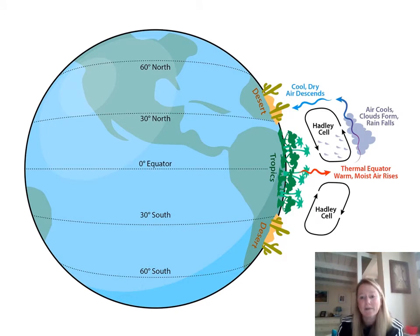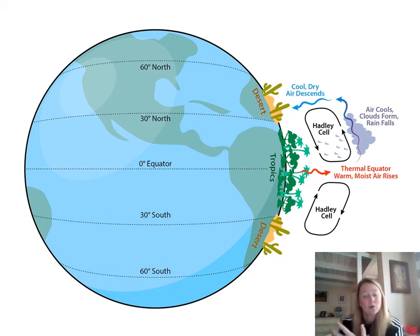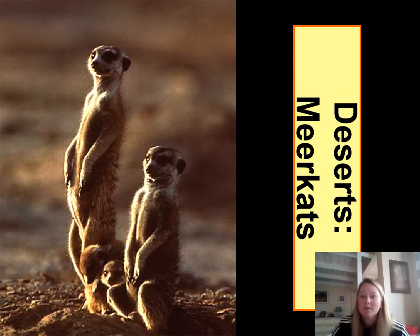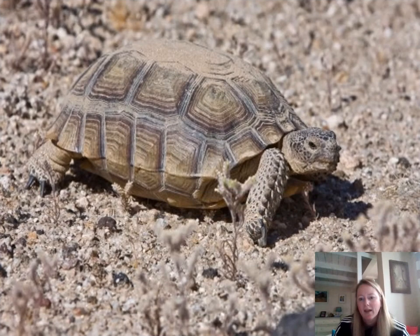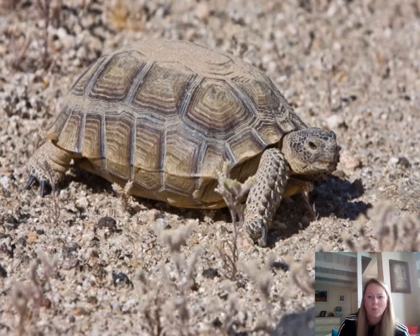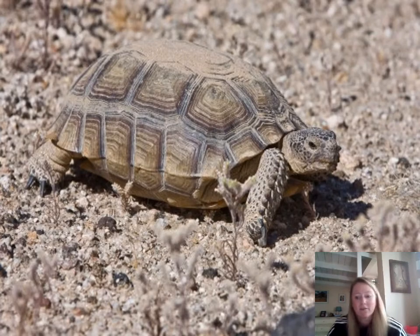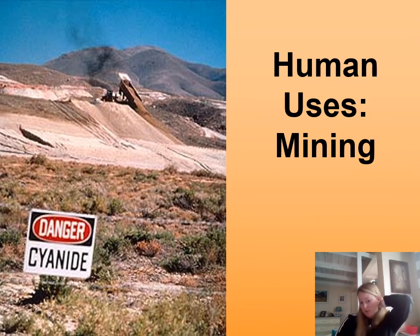Deserts are usually found 30 degrees north or south of the equator. Warm, moist air rises off the equator, then cools higher in the atmosphere, and descends in what's called a Hadley cell at about 30 degrees north or south. Organisms like meerkats and the desert tortoise have adapted to low moisture conditions — storing water for long periods or burrowing during the day to escape the heat. Locally, deserts have been used for mining minerals.